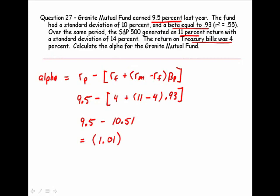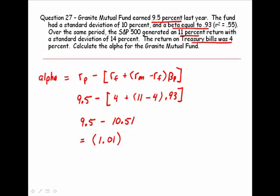What can we conclude from this information? On a risk-adjusted basis, the negative alpha of 1.01% is an absolute measure of performance, and Granite Mutual Fund underperformed the market on a risk-adjusted basis by 1.01%.